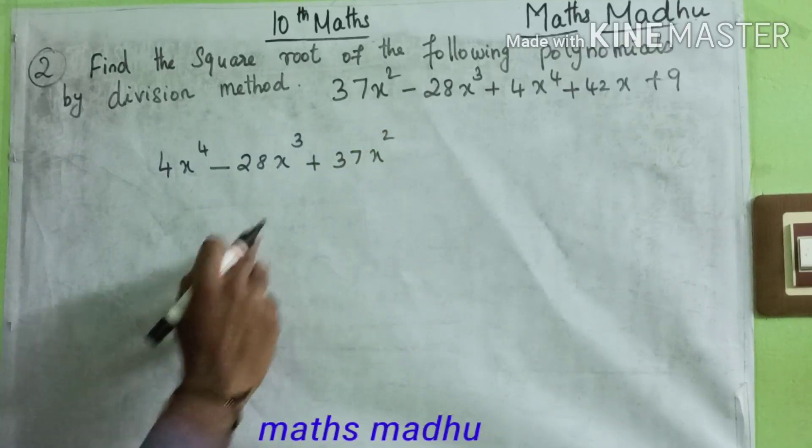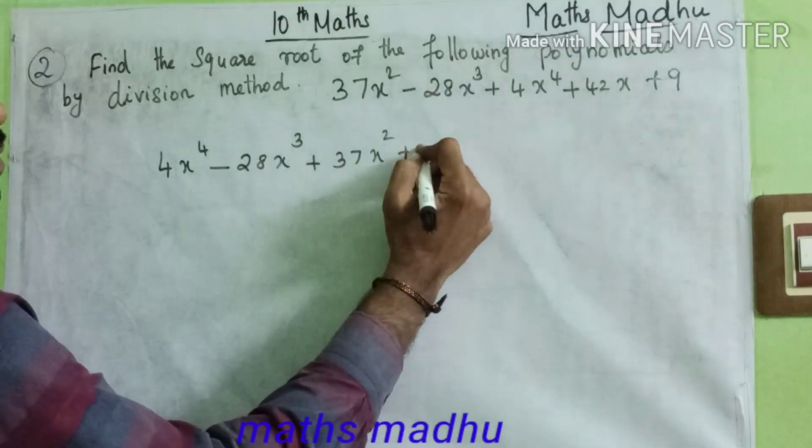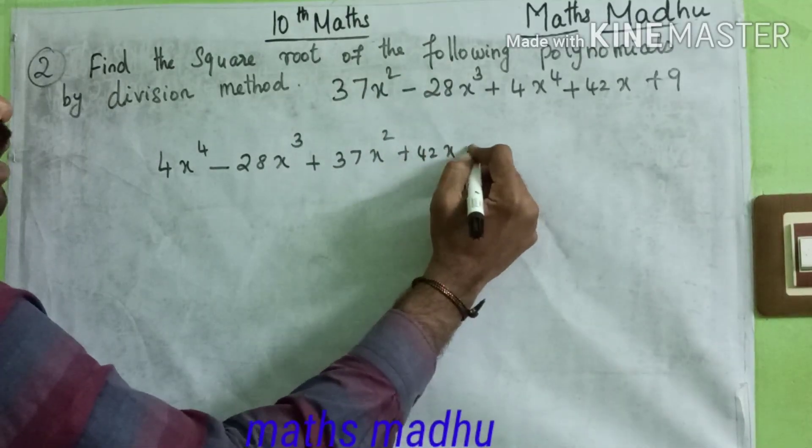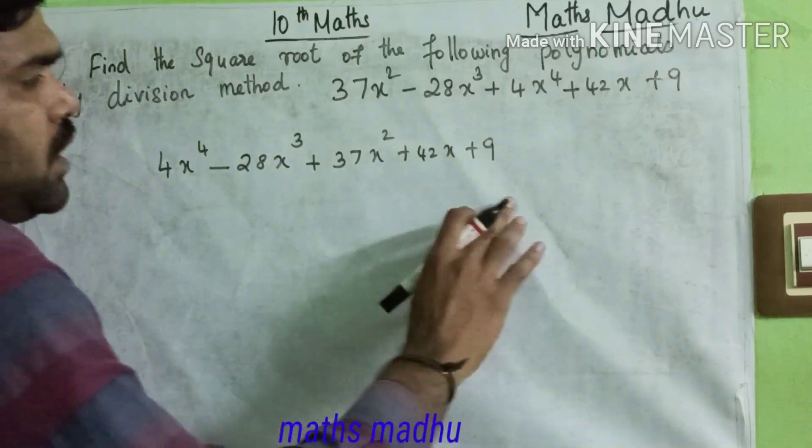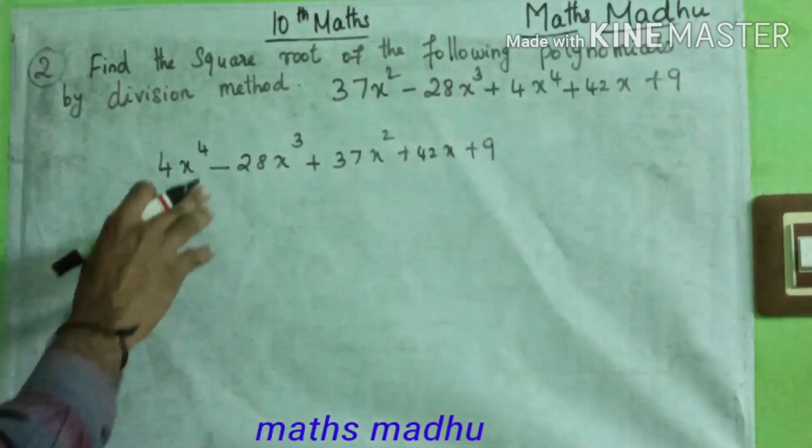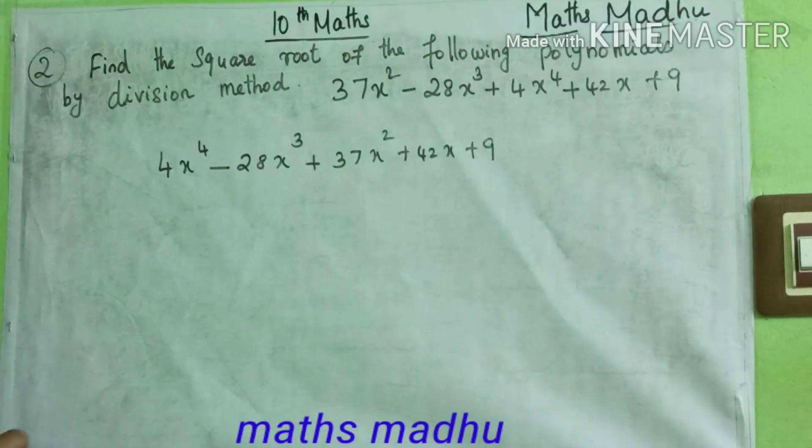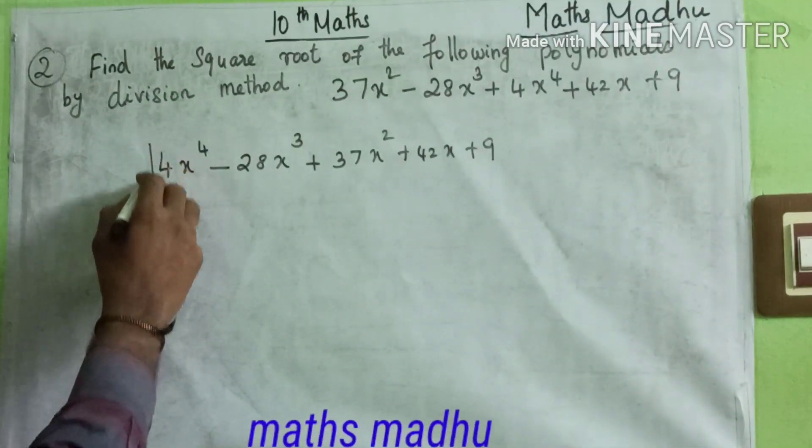Add this x, so plus 42x plus 9. So next is the division method of power, the division method of positive in the division order.